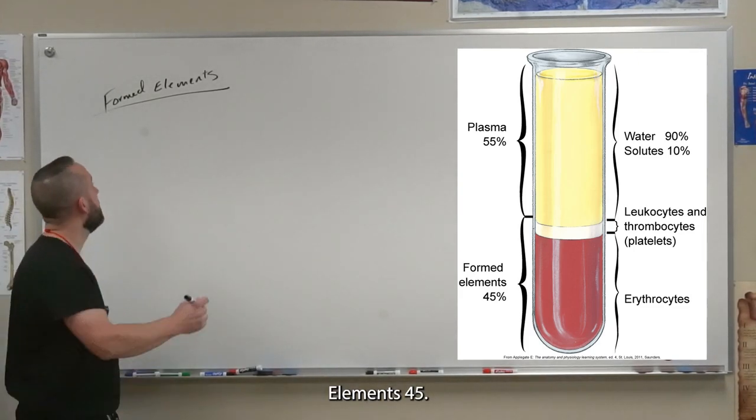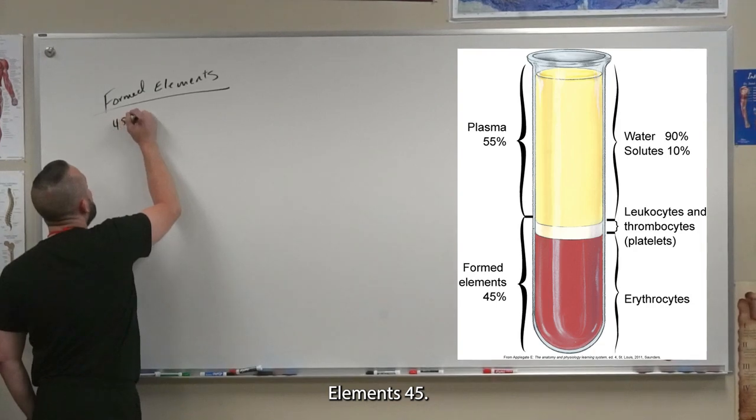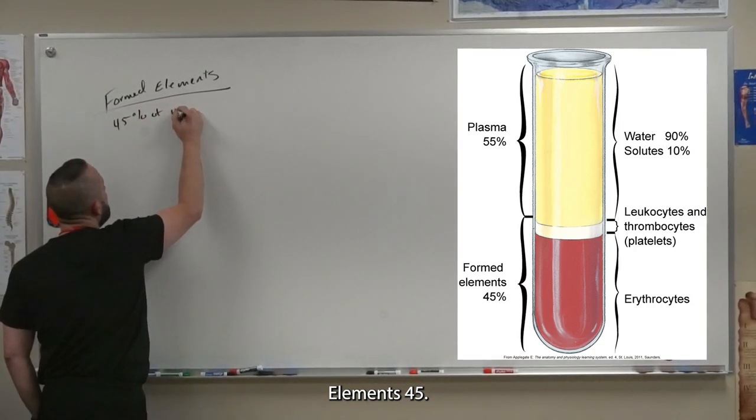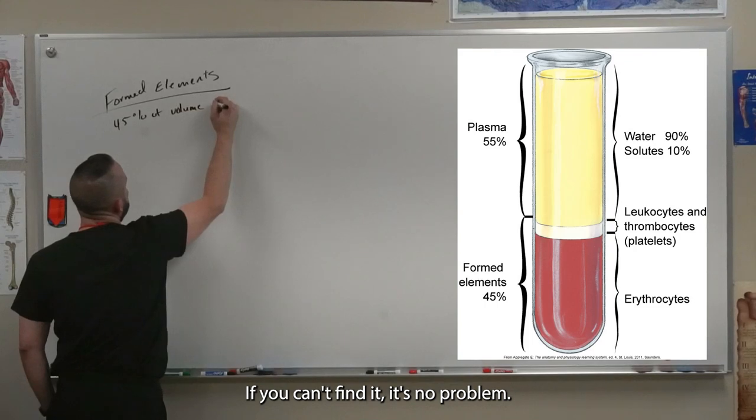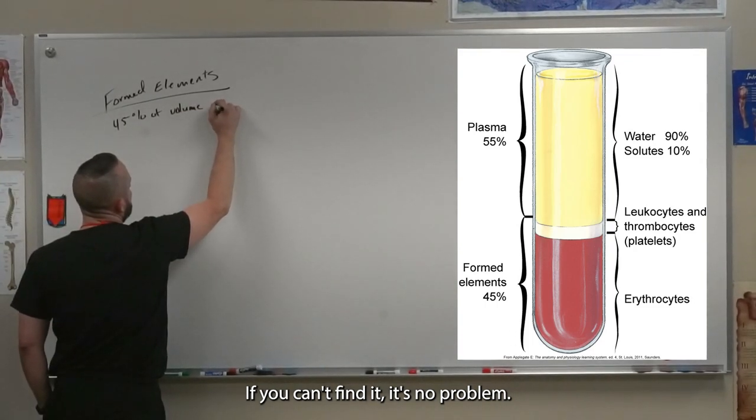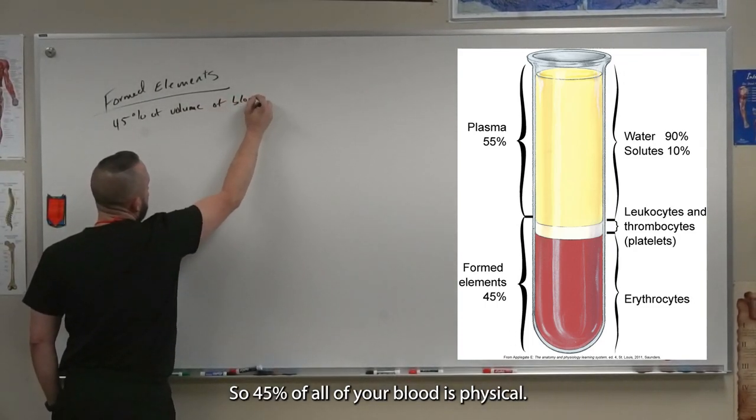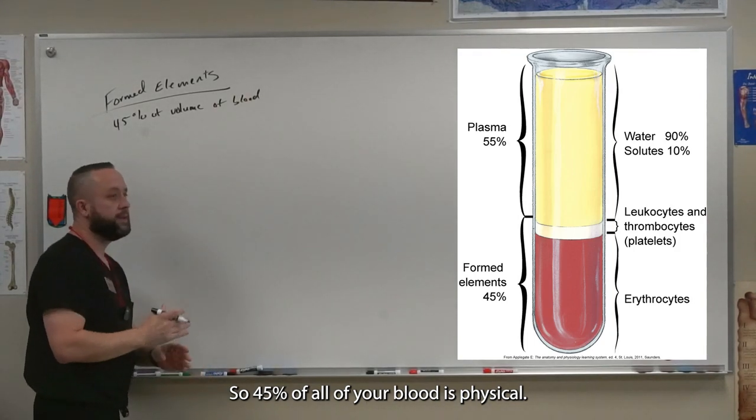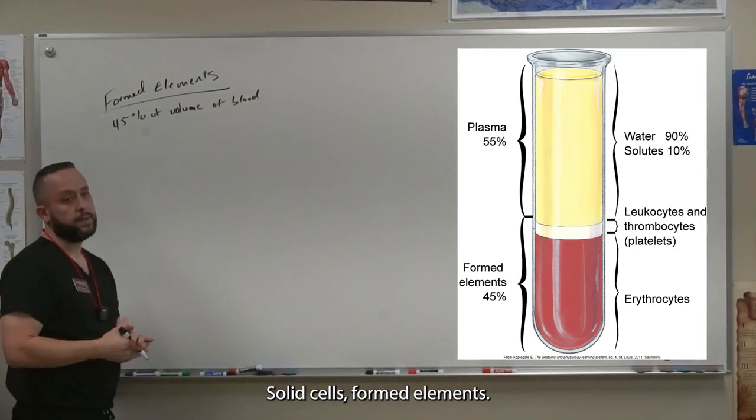45 percent. So 45 percent of all of your blood is physical solid cells, formed elements.